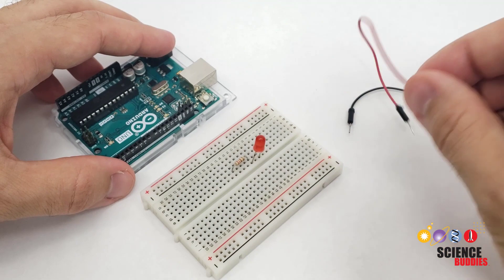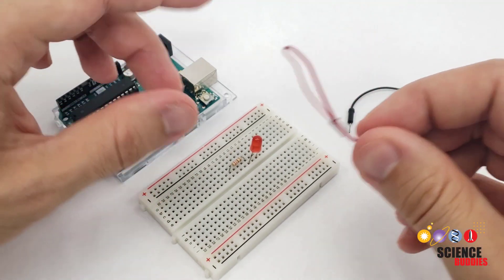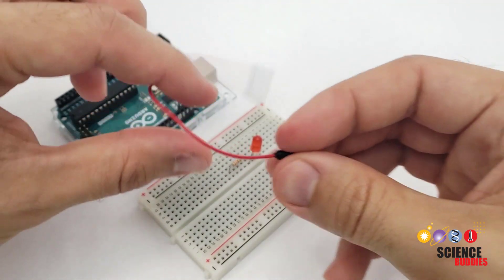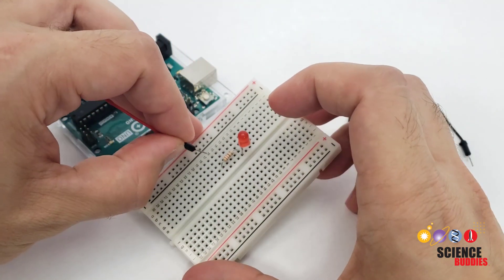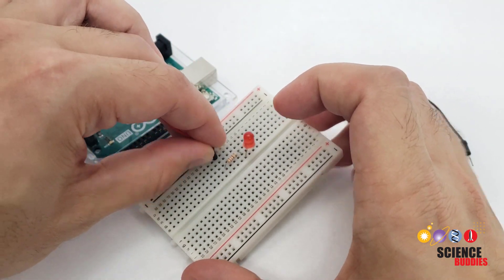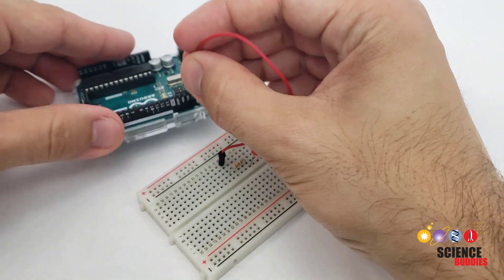Next, I'm going to use my jumper wires to connect my circuit to my Arduino. I'm going to use my red wire to connect the positive end of my circuit, which is the free end of the resistor, to Arduino pin 12.